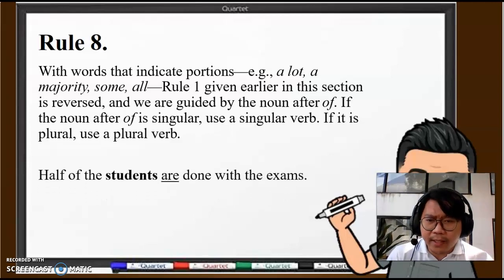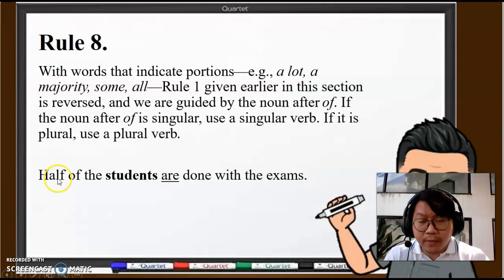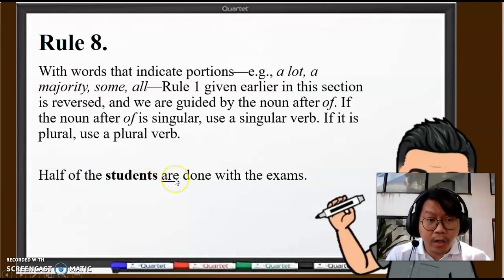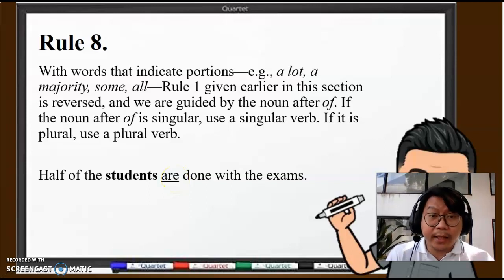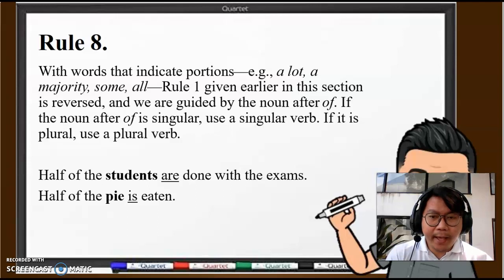Let's have a look at a couple of examples. "Half of students are done with the exams." "Half" is not the subject here. The subject is "students." Students, plural, therefore "are." This is the opposite of our earlier rule where we ignored the words after "of." In this particular case, when it's portions, the rule is reversed.